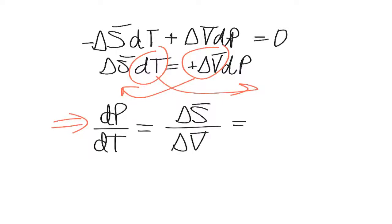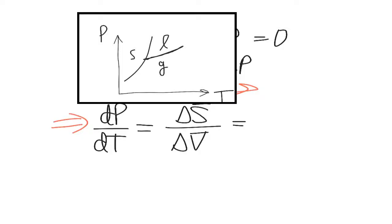And this is what's called the slope of the phase coexistence curve. In this case, we're looking at the liquid to gas transition, so we're looking at the liquid vapor coexistence curve.